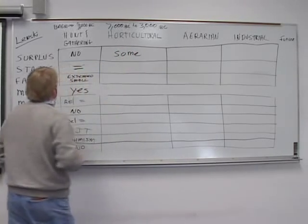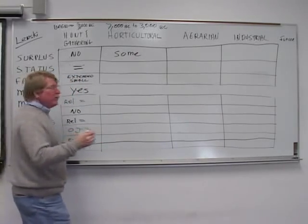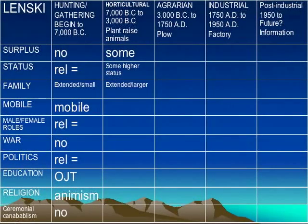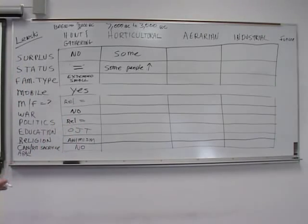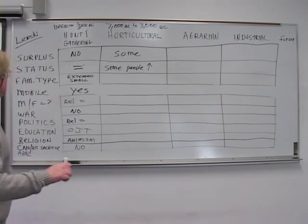That simple little change creates some surplus. And the fact that you've got some surplus means that the statuses remain fairly equal, but some people have higher status. And what's that status based upon? It's based upon owning more goats or being more successful with the crops. But still it's very tribal based, not individualistic based.